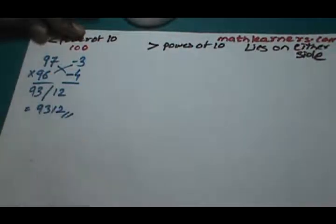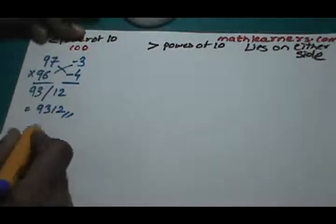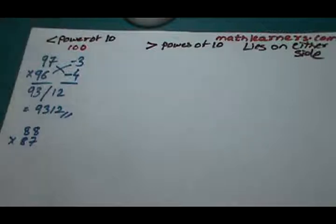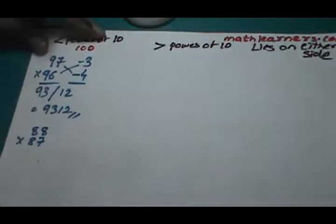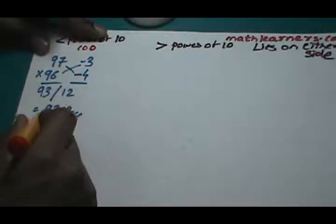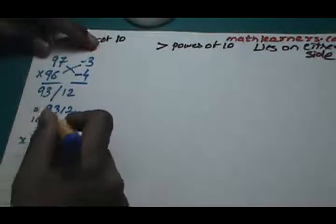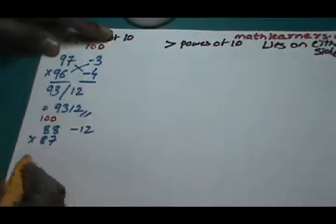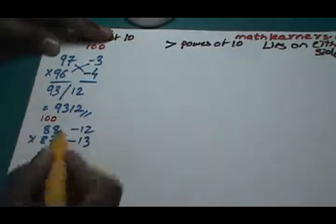Let's take another problem. Suppose we want to multiply 88 by 87. As both numbers are closer to 100, base can be taken as 100. 88 is 12 less than 100 so we write it as minus 12, and 87 is 13 less than 100, so that can be written as minus 13.